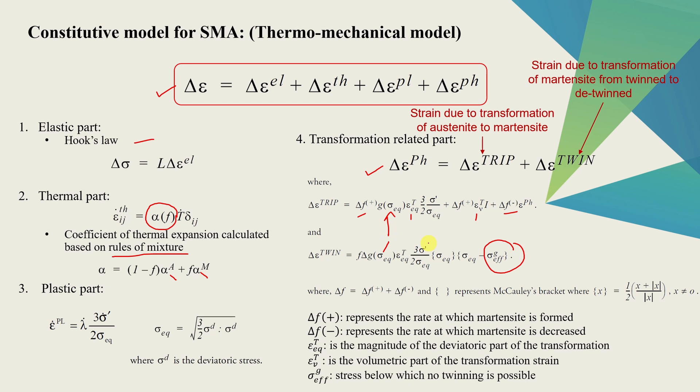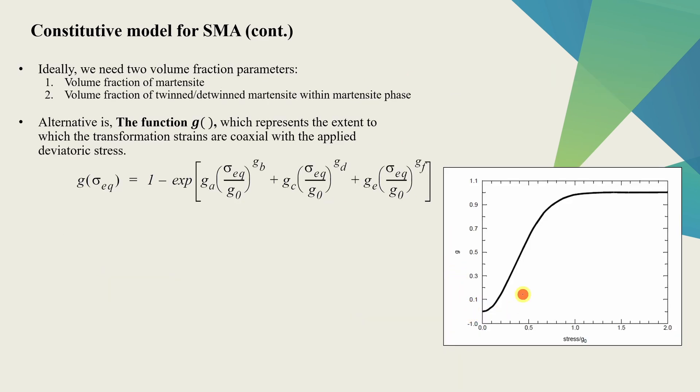This G function is dependent on equivalent stress. Again, this can be von Mises or any other type of stress as well. This G function varies between 0 to 1 as shown over here. And this represents the extent to which the transformation strains are coaxial with applied deviatoric stress. The formula for G function is shown over here.